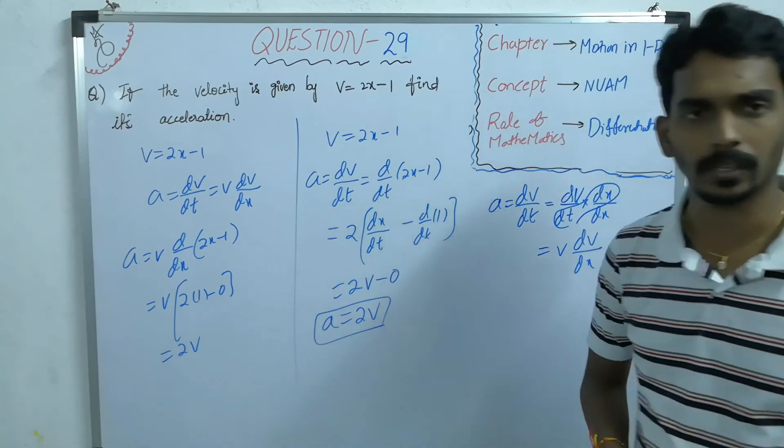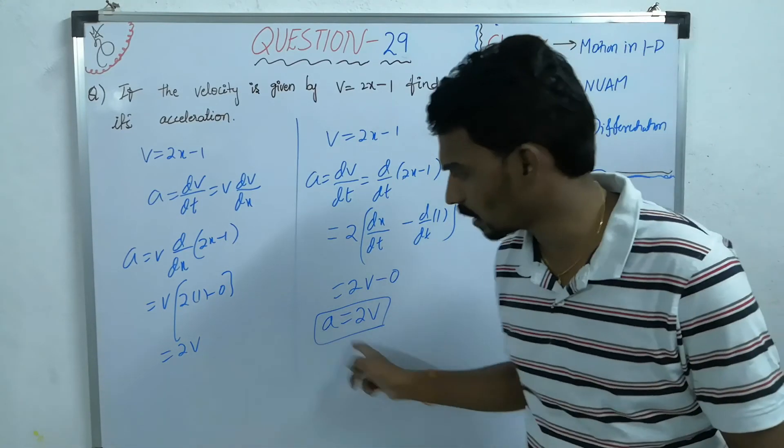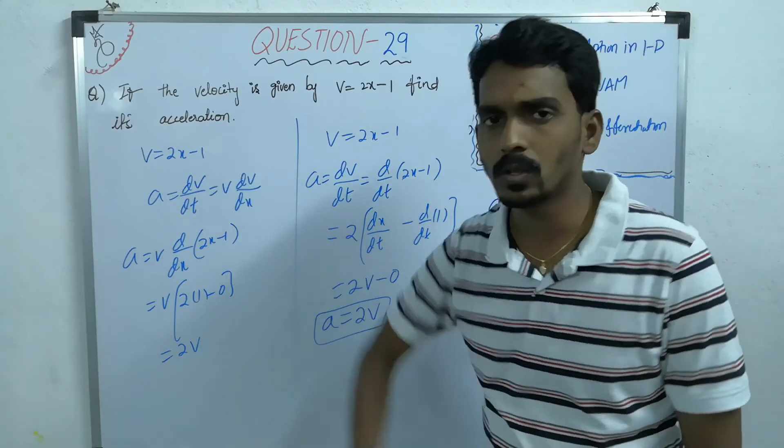So, what is acceleration? 2v. So, again you got the same thing. Where v is how much? 2x minus 1.